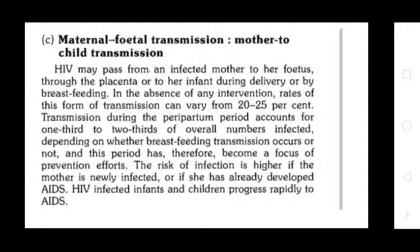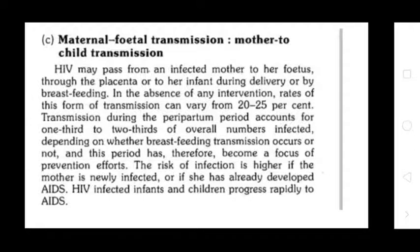3. Mother-to-Child Transmission: HIV may be passed from an infected mother to her fetus through the placenta, or to her infant during delivery or breastfeeding. In the absence of any intervention, rates of transmission vary from 20–25%. Transmission during the antenatal period accounts for one-third to two-thirds of overall infection, depending on breastfeeding practices. The risk of infection is higher if the mother was newly infected or has already developed AIDS. HIV-infected infants and children progress rapidly to AIDS.